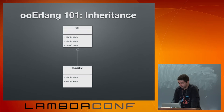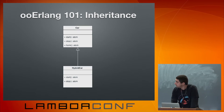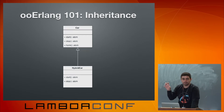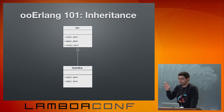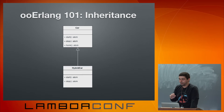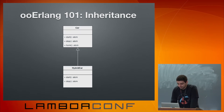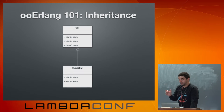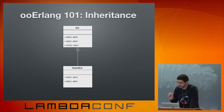The second pillar of object-oriented programming is inheritance. Here's a simple example: we have a Car as the parent class and HybridCar as a child. The parent Car has methods to start the engine, stop the engine, and honk. The HybridCar overrides the implementation of start and stop, but uses the honk method from the parent class.